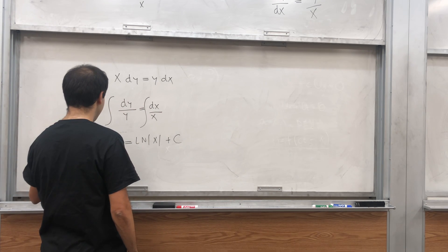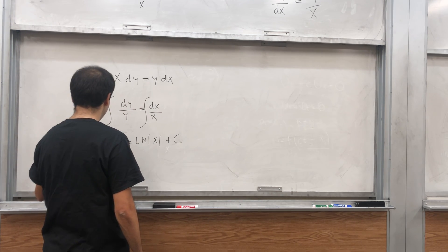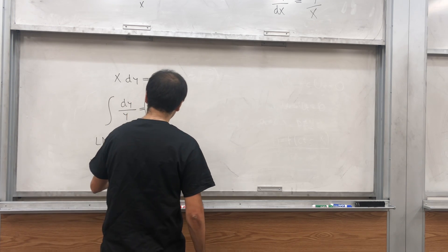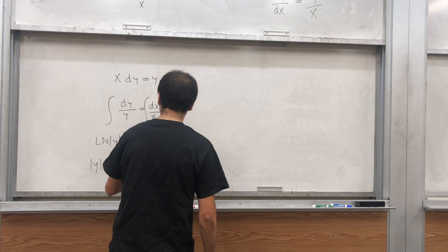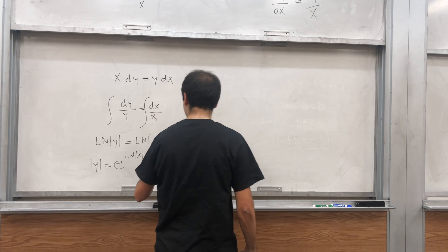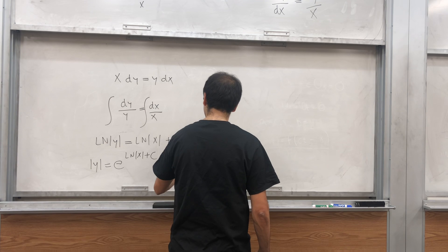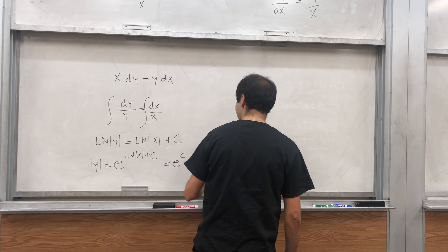And then exponentiate if you want. So basically what we get, absolute value of y is ln of absolute value of x plus a constant. And that becomes e to the c, e to the ln of absolute value of x.